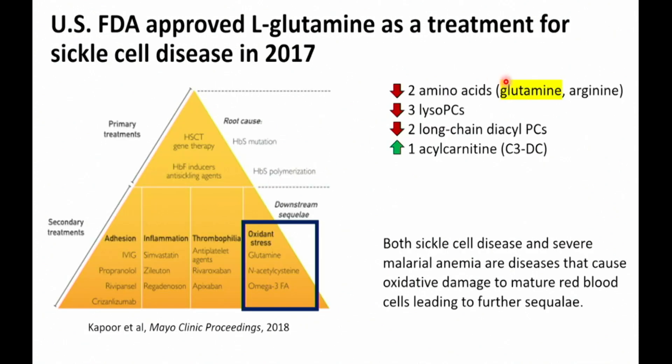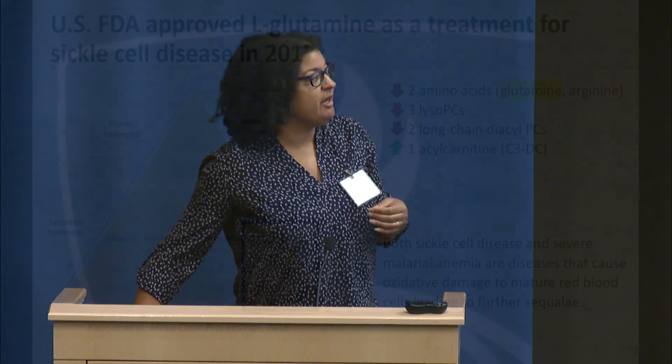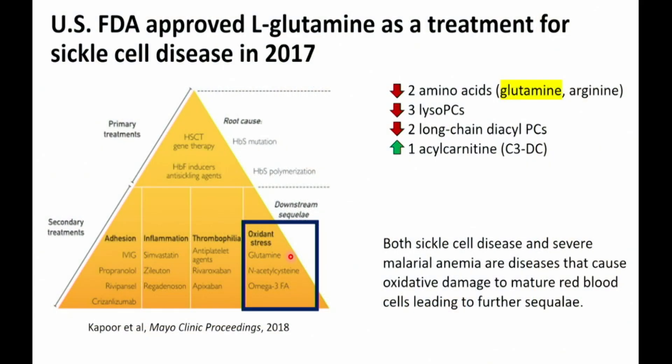Another reason glutamine was an attractive path to follow is that it is already an FDA-approved treatment for sickle cell disease. In 2017, it was approved and is used as a secondary treatment in addition to hydroxyurea to reduce oxidative stress in red blood cells. Thinking that both sickle cell disease and severe malarial anemia cause a lot of oxidative damage to red blood cells, we were curious about how these amino acids might impact red blood cell function. The question became: does the availability of plasma glutamine impact red blood cell function during the acute phase?